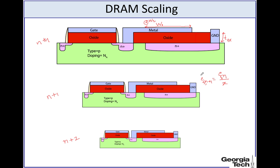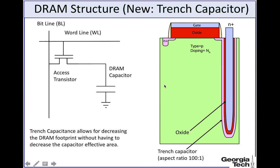You can readily understand the problem with DRAM scaling: as you progress to different generations your capacitance decreases, and if your capacitance decreases, the amount of charge the capacitor can hold decreases. If the charge stored in the storage capacitor decreases, then the refresh time also has to reduce, meaning you have to refresh the DRAM cells more frequently — and this is a problem you don't want.